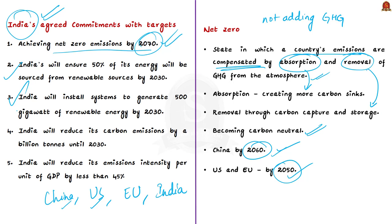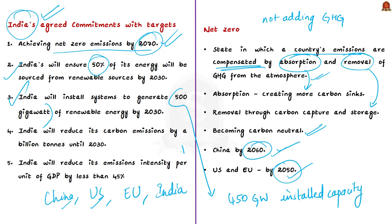The second target concerns renewable energy: India will ensure 50% of its energy will be sourced from renewable sources by 2030. The third target concerns renewable energy installed capacity: India would install systems to generate 500 gigawatts of renewable energy by 2030. India had previously committed to 450 gigawatts; the new commitment raises this by 50 gigawatts. The fourth target is that India will reduce its carbon emissions by one billion tons until 2030. The fifth target is to reduce emissions intensity per unit of GDP by less than 45%.